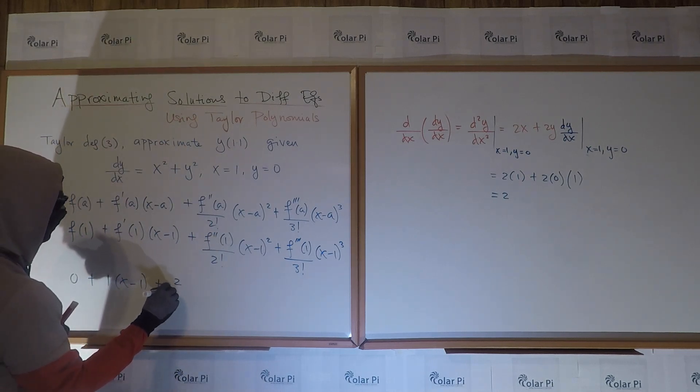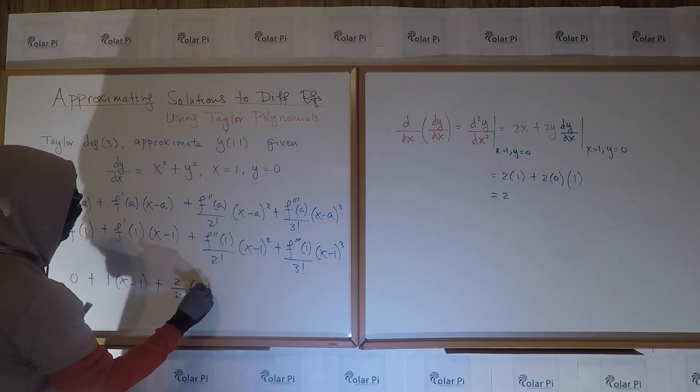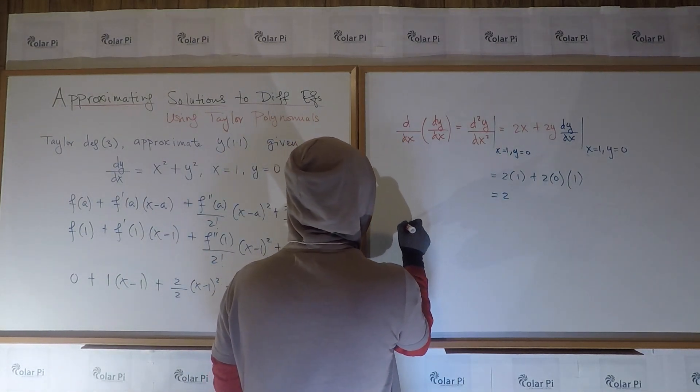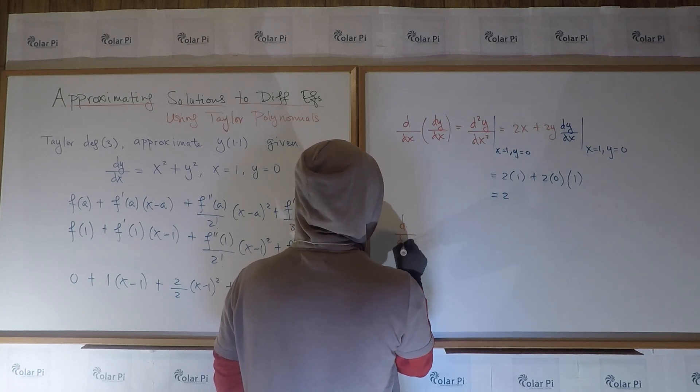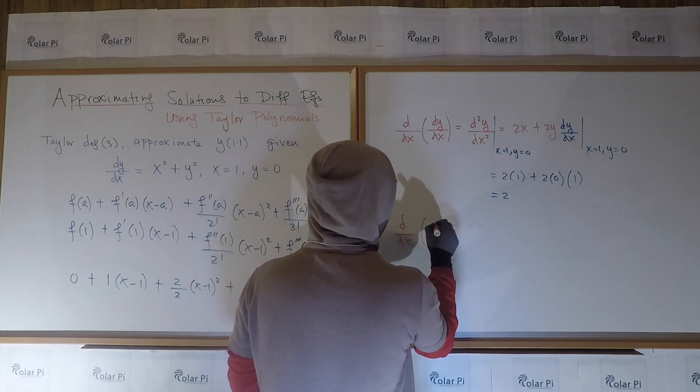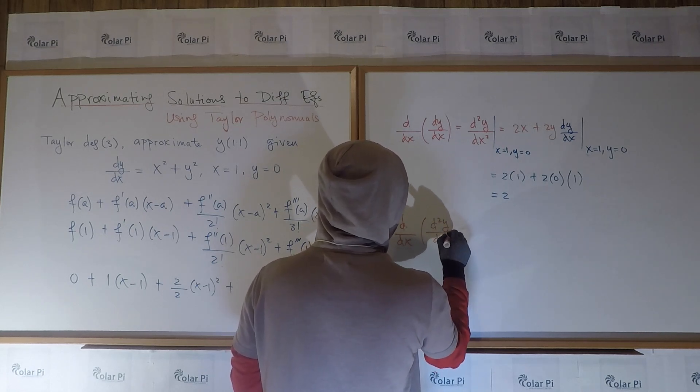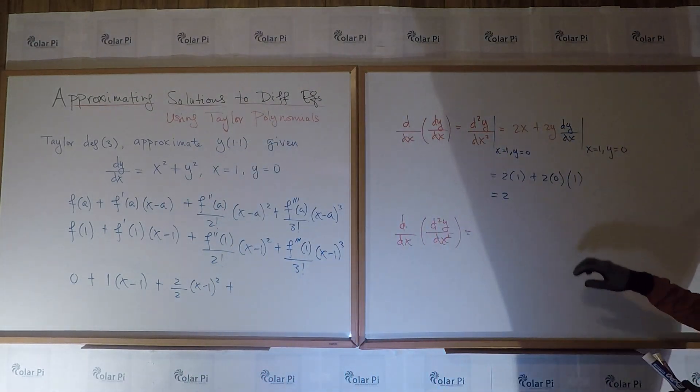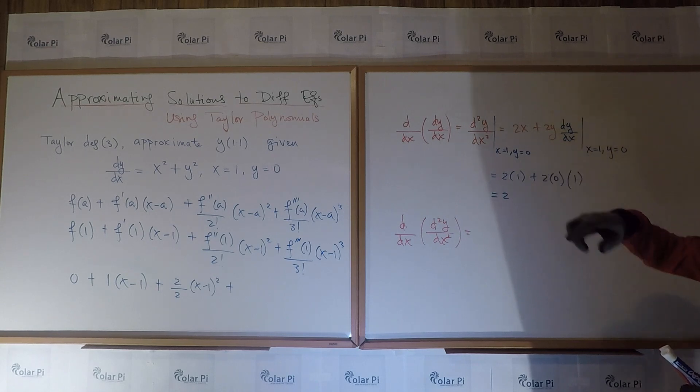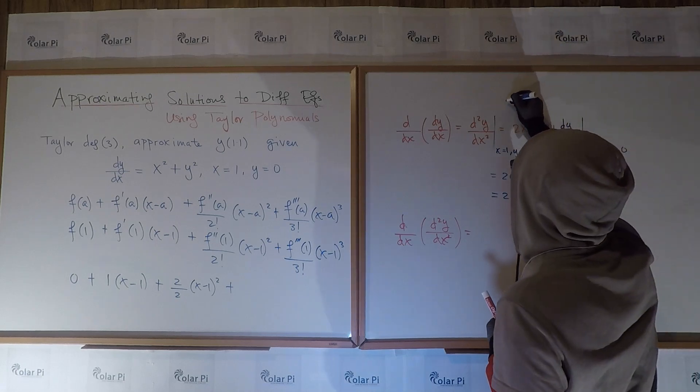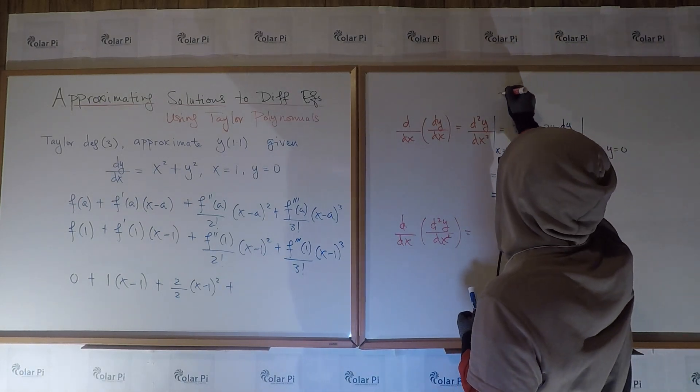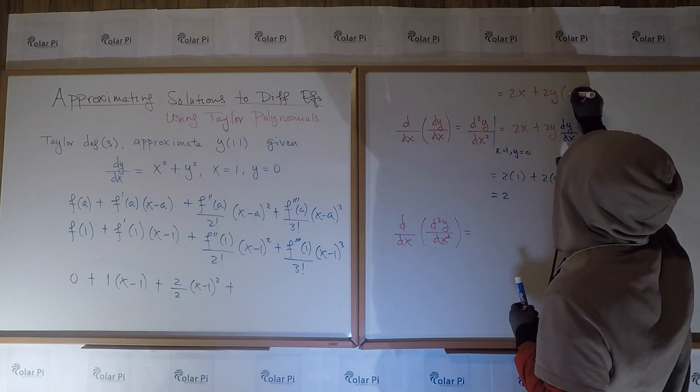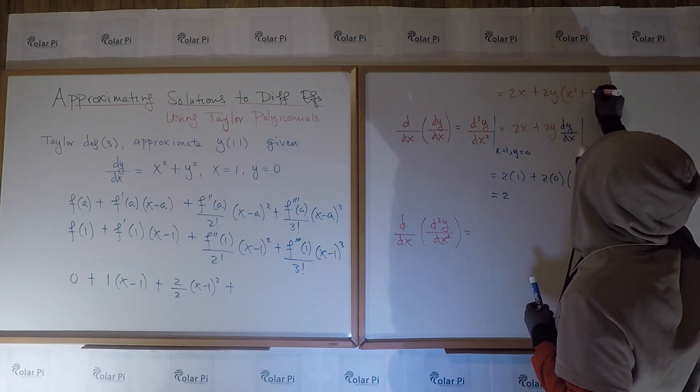And so the second derivative is gonna be 2x plus 2y times dy/dx. And we need to evaluate this at x equals 1, y equals 0. We already evaluated dy/dx, the first derivative, at x equals 1, y equals 0, and we found it to be 1, so here, in theory, we could replace this dy/dx with x squared plus y squared, but why do that when we already know the value of 1? It's just gonna be 1 here. So we see that evaluating this at x equals 1, y equals 0 amounts to writing 2 times 1,